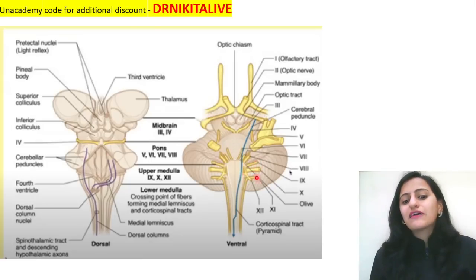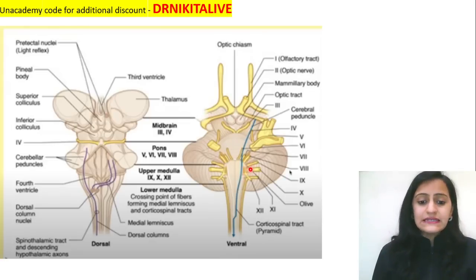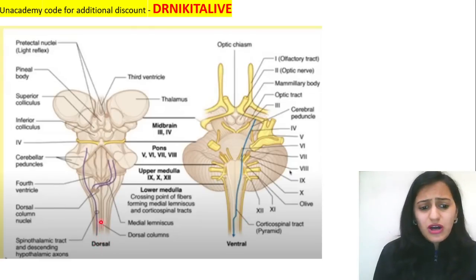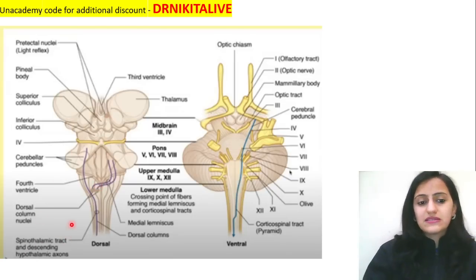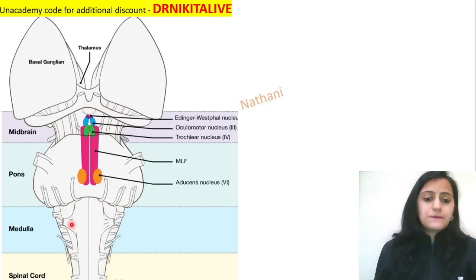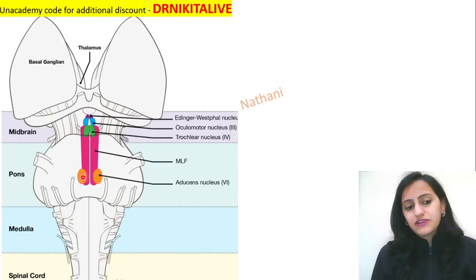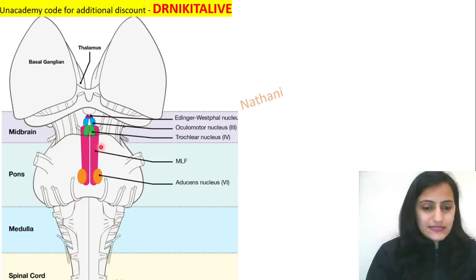CN9 and CN11 have lateral origins. The corticospinal tract decussates in the lower medulla. The dorsal column medial lemniscus pathway also crosses in the medulla, while the spinothalamic tract crosses at the spinal cord level. The MLF — medial longitudinal fasciculus — connects the sixth cranial nerve nucleus with the contralateral third cranial nerve nucleus.